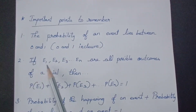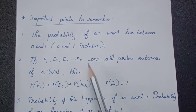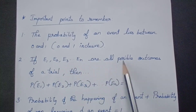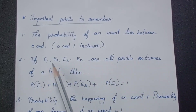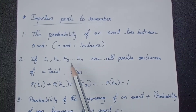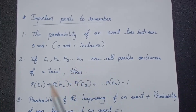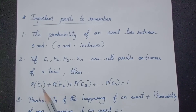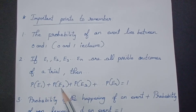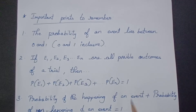If E1, E2, E3 are events representing all possible outcomes of a trial, then the sum of the probabilities of all events — P(E1) + P(E2) + P(E3) — equals 1.